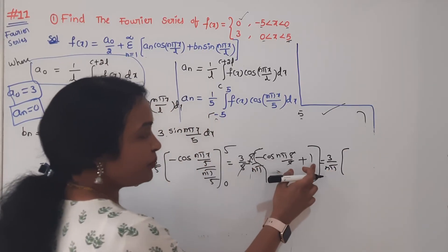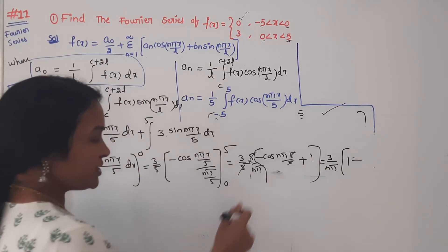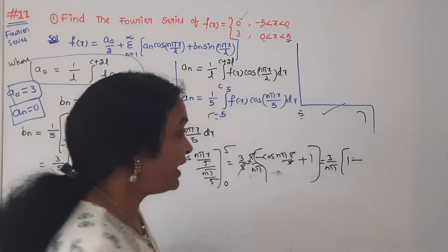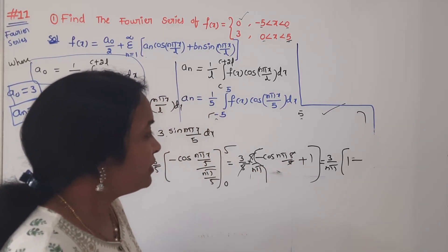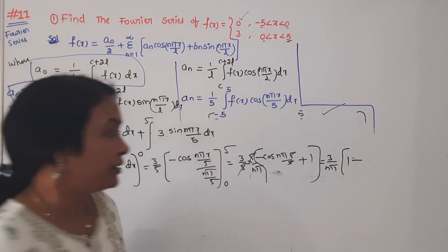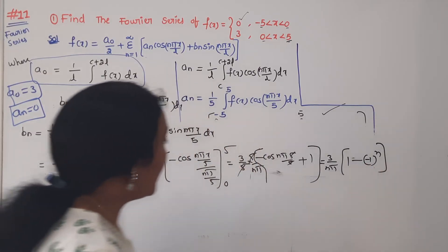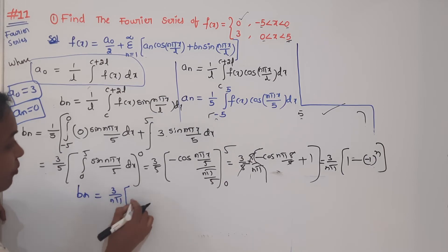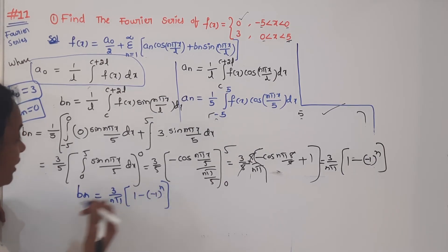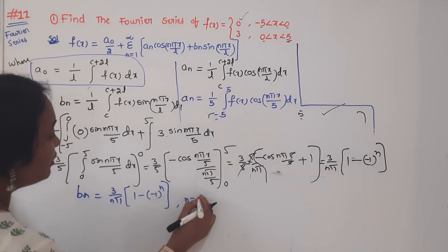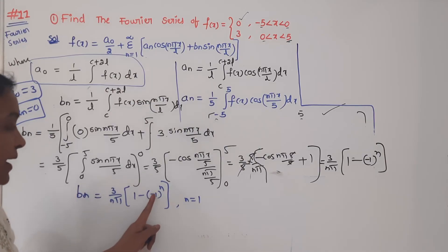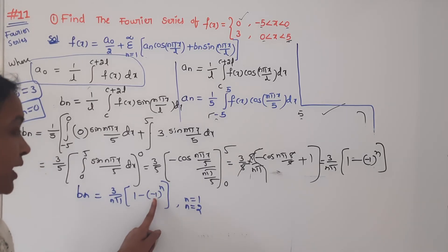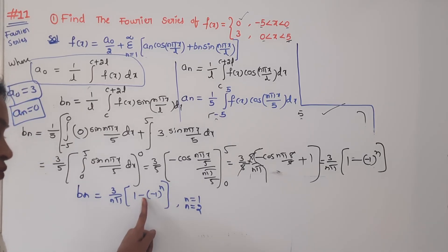Substituting the limits: upper limit gives −cos(nπ), lower limit gives −cos(0) = −1. So Bₙ = 3/(nπ) × [−cos(nπ) − (−1)] = 3/(nπ) × [1 − cos(nπ)] = 3/(nπ) × [1 − (−1)ⁿ]. When n is even, (−1)ⁿ = 1, so Bₙ = 0. When n is odd, (−1)ⁿ = −1, so Bₙ = 6/(nπ).